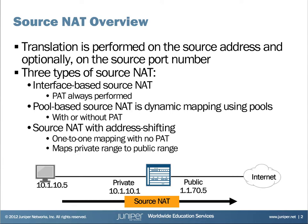There are three different ways we can implement source NAT in the SRX — three different types. Interface-based source NAT is simply where we translate our source IP address to our outgoing or egress interface's public address, and port address translation (PAT) is enabled. PAT allows us to scale one public address to multiple internal private addresses.